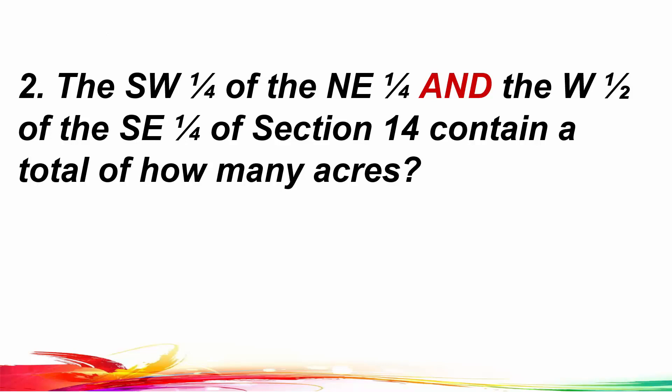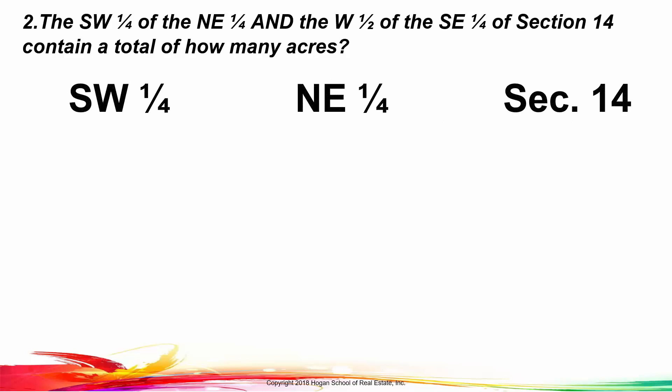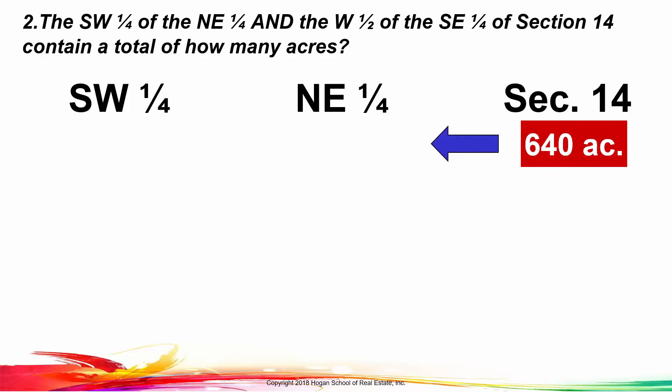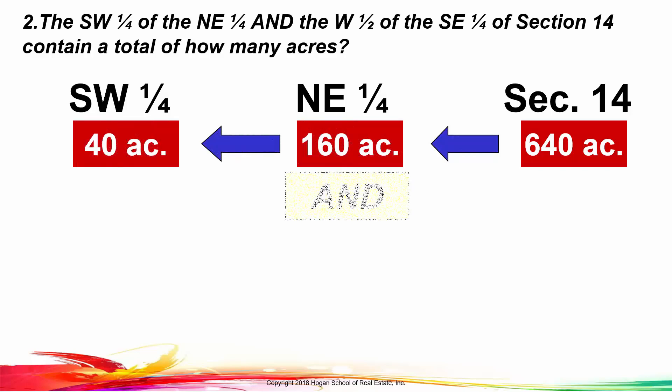Number two: the southwest one quarter of the northeast quarter and the west half of the southeast quarter of section 14 contain a total of how many acres? Let's write down the description of the first part — the southwest quarter of the northeast quarter of section 14. Section 14 contains 640 acres, and the northeast quarter of that contains 160, and the southwest quarter of that is 40 acres.